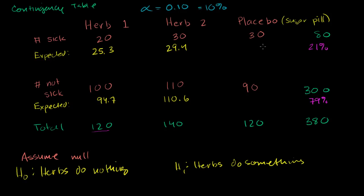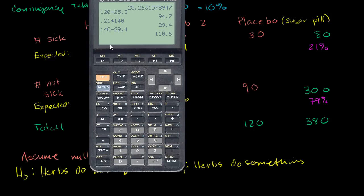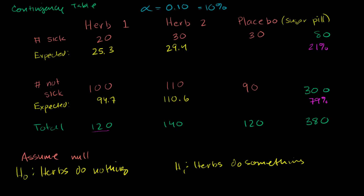And then in the placebo group, we expect 21% of 120 to get sick. That gives us 25.3 — the same as group one since the group sizes are the same — and 94.7 should not have gotten sick. The reason I use 25.3 here instead of 25.2 is to stay consistent, since I retained more decimal precision earlier. So if you just look at the data, it looks like herb two might be somewhat different, but we don't want to make judgments just by staring at the numbers.